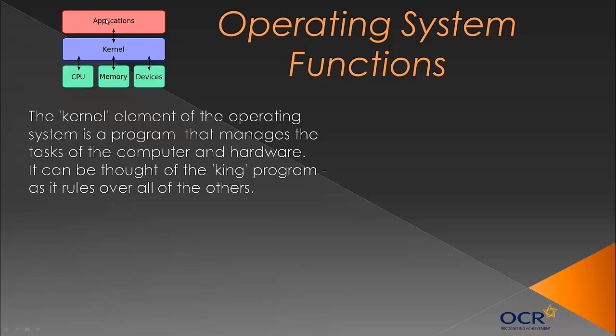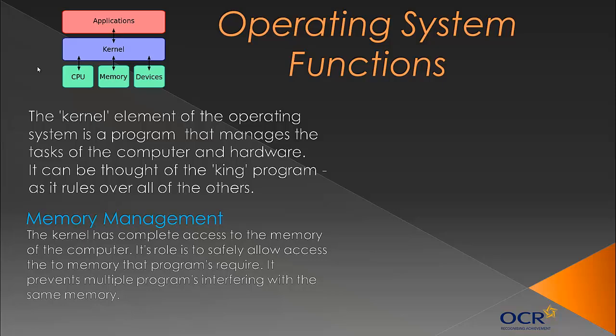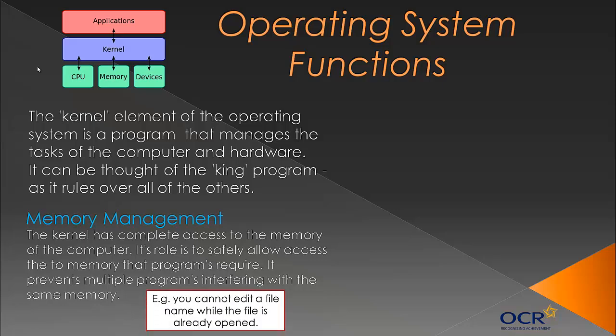The kernel interacts with the applications and through that, hardware can be accessed. An important function — specifically through the kernel — is memory management. The kernel has complete access to the memory of the computer and its role is to safely allow access to the memory that programs require. It makes sure that multiple programs running at any given time don't all interfere with the same memory. For example, you can't change a file name or edit a file while it's already open — if you have a Word document open, you can't change it in Windows Explorer.